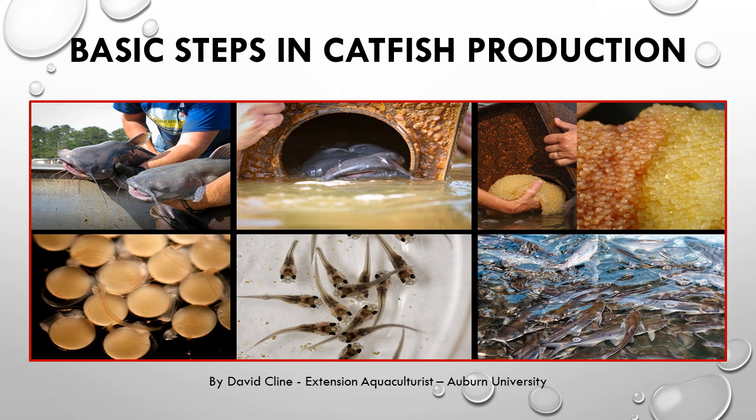The production of any aquatic crop involves multiple steps, and many of these steps are consistent between species. Some of the steps include broodstock selection, controlled reproduction, egg care and management, larval rearing, feeding, maintaining water quality, harvesting, processing, transportation, and marketing.